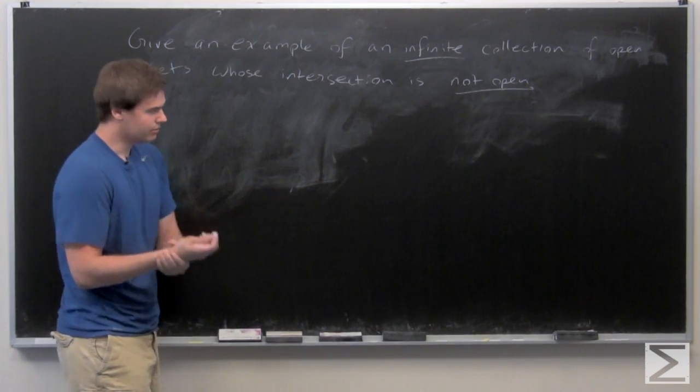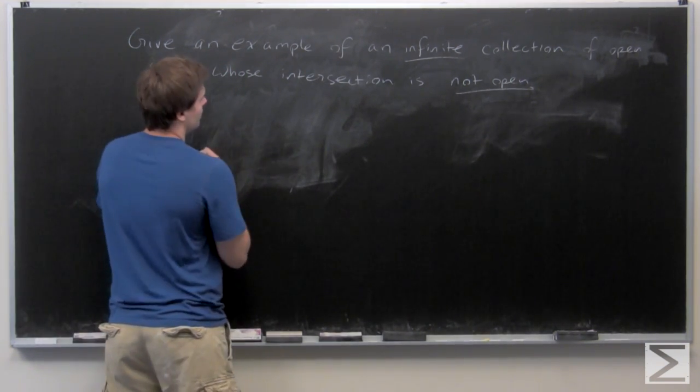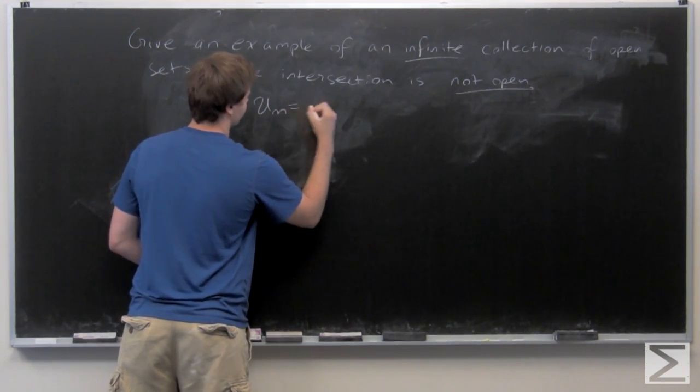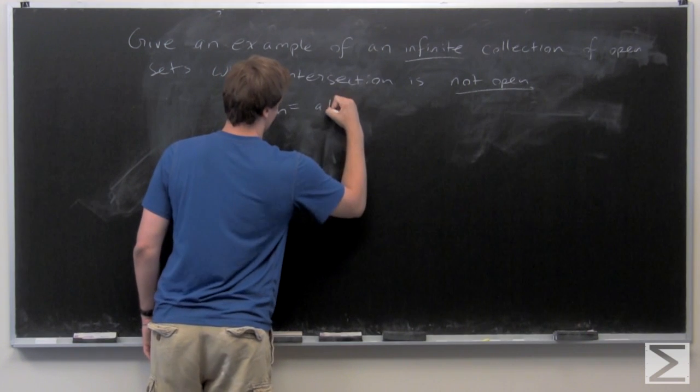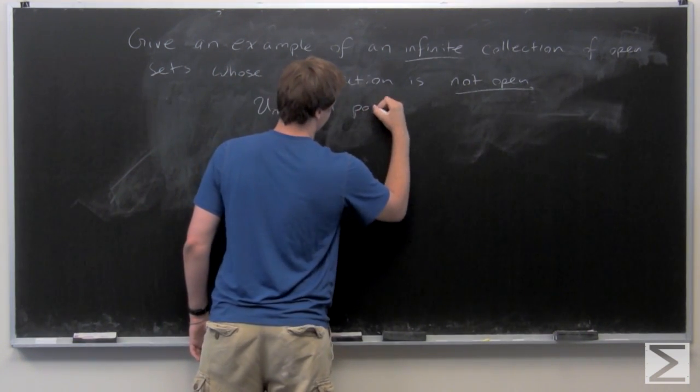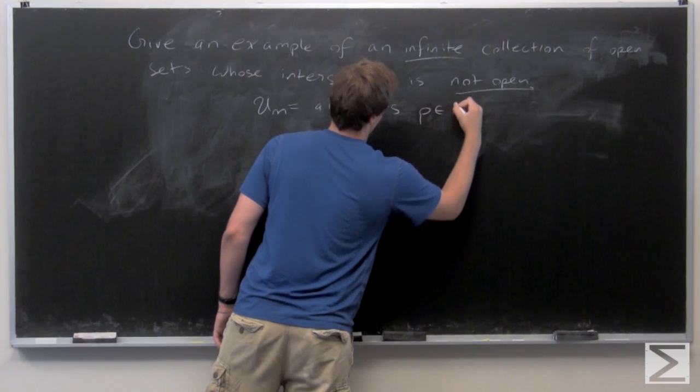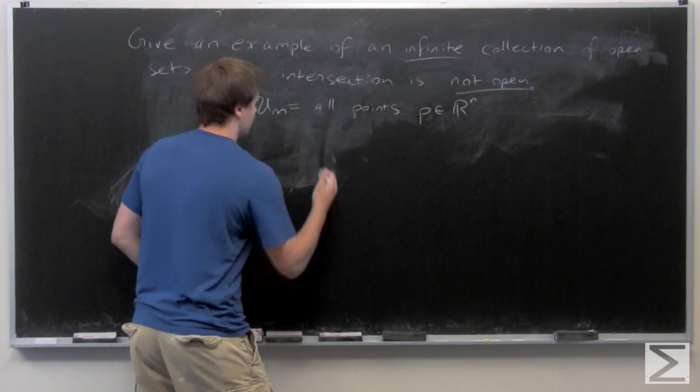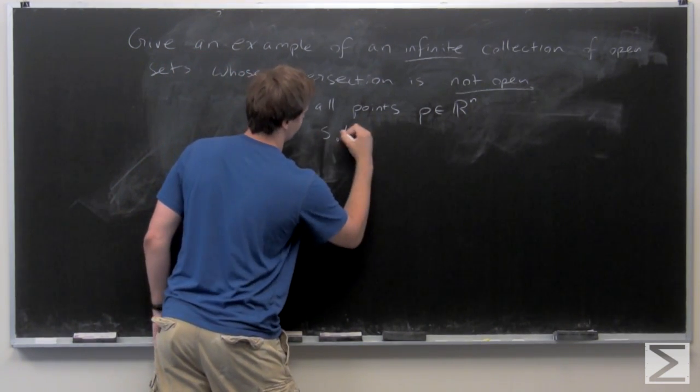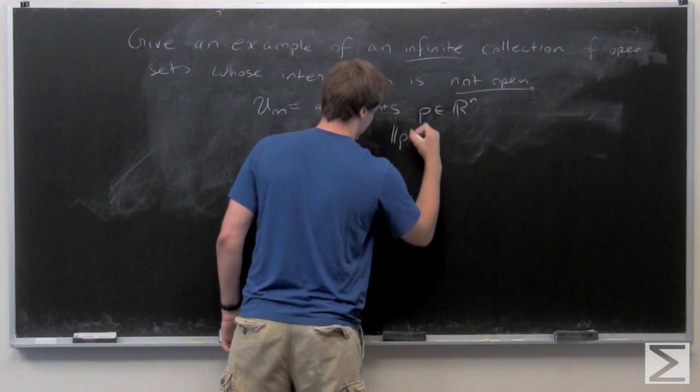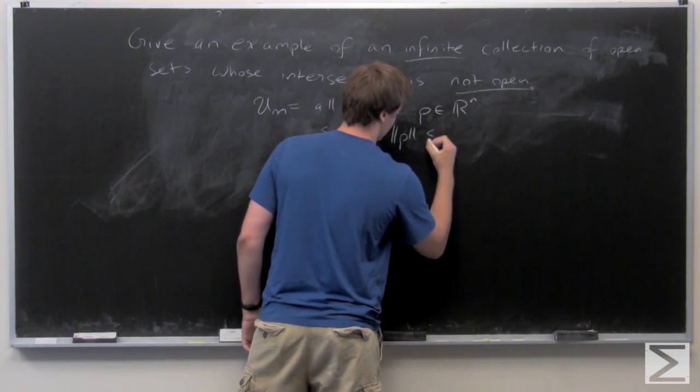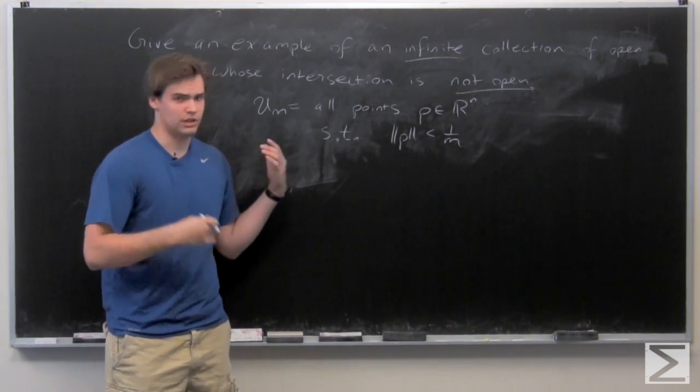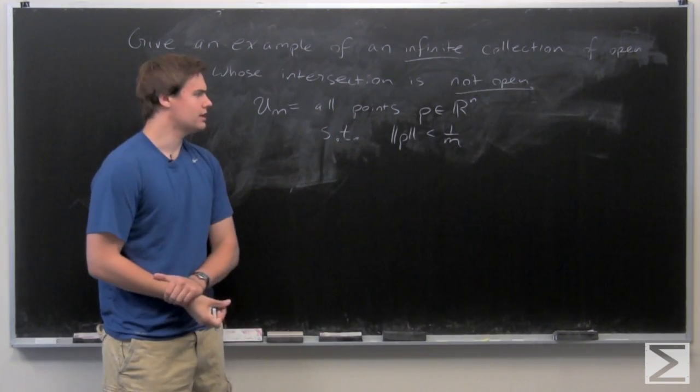So let's define our elements of this collection. We say that U sub m is the set of all points P in R^n, for any n, it doesn't really matter here, such that the distance from P to the origin, or the norm of P, is less than 1 over m.